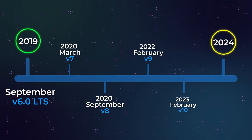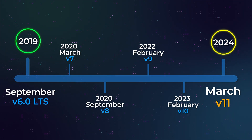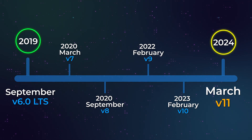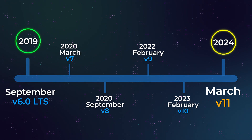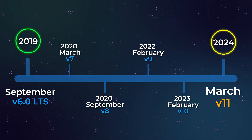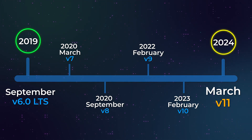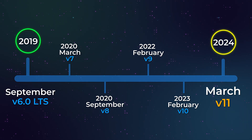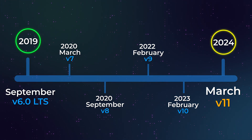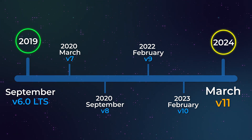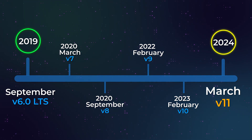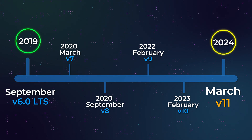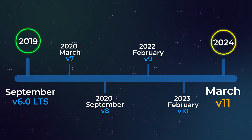Moving forward to September of 2019, Laravel switched to semantic versioning with the release of Laravel version 6. This meant that minor updates like 6.1, 6.2, and so on no longer introduced breaking changes. Major versions now correspond to full version number increments such as Laravel 7, 8, 9, and so on. Currently, in 2024, the current Laravel version is version 11.